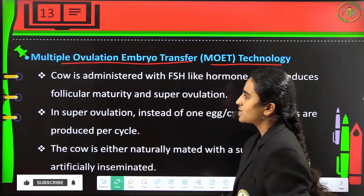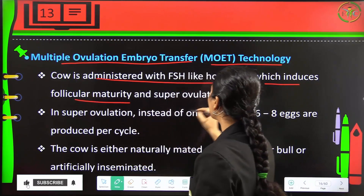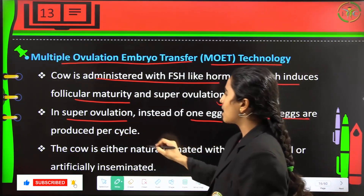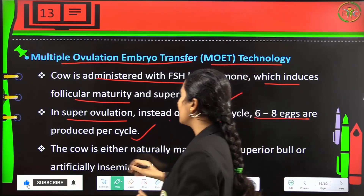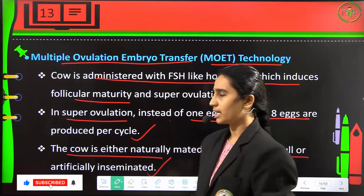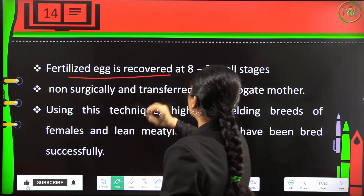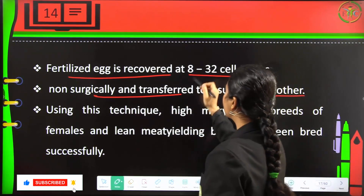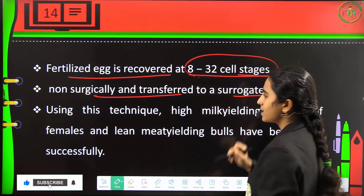Multiple Ovulation Embryo Transfer (MOET) technology involves administering the cow with FSH-like hormones (follicular stimulating hormones) which induce follicular maturity and super ovulation. In super ovulation, instead of one egg per cycle, six to eight eggs are produced. The cow is either naturally mated with a superior bull or artificially inseminated, and the fertilized egg is recovered at the eight to thirty-two cell stage and non-surgically transferred to a surrogate mother.